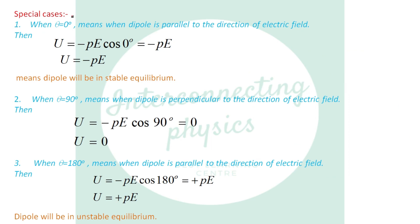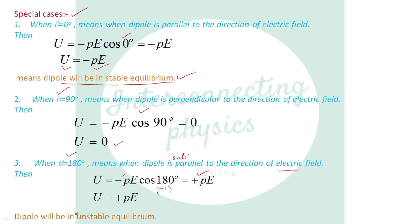Special cases for potential energy: if θ = 0° (dipole parallel to E), U = −pE (minimum, stable equilibrium). If θ = 90°, U = 0. If θ = 180° (dipole anti-parallel to E), cos180° = −1, so U = +pE (maximum, unstable equilibrium). This concludes today's lecture covering electric dipole, electric field on the axial and equatorial lines, torque acting on the dipole, and potential energy of the dipole.